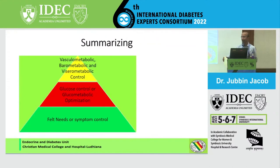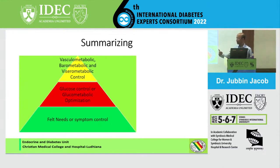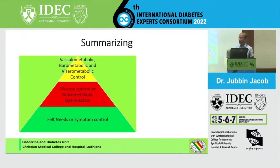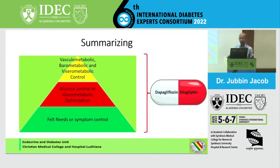In summary, we heard masterful talks on all the various things we need to do. But if you are short of time and following a pyramid — deciding things quickly — looking at metabolic control, glucose control that the patient can see in improvements in his values, and the icing on the cake which is vascular metabolic control, barometabolic control, and visceral metabolic control including improving liver and gonadal outcomes, I think this combination of dapagliflozin and sitagliptin may be an excellent choice. Thank you very much.